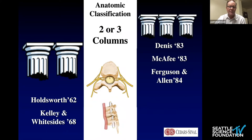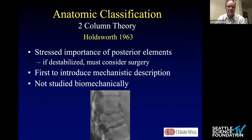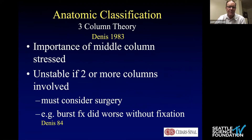Denis, McAfee, Ferguson Allen, and others contributed over the years. The anatomic classifications really looked at a two-column theory back in the 1960s — a front half and a back half of the spine — which was a good stepping stone. It stressed that if the posterior elements are destabilized, we ought to consider surgery. In the early 1980s, Denis described the three-column theory with five types and 20 subtypes, looking at the anterior longitudinal ligament, the middle column, and the posterior column. It really did make a lot of sense and was another good stepping stone.